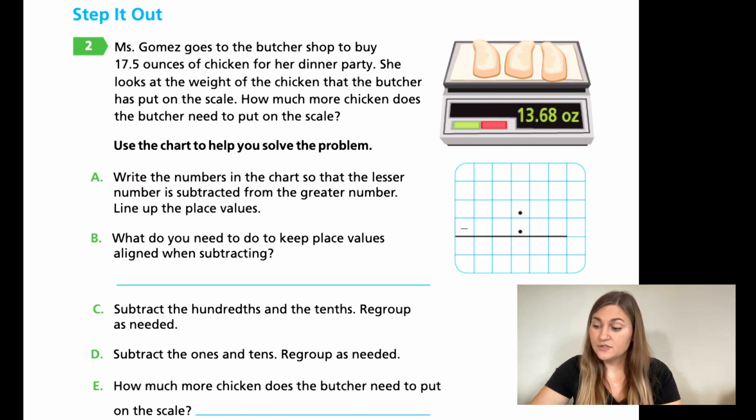B, what do you need to do to keep place values aligned when subtracting? Is there something you might need to add to make sure that those numbers stay aligned? C, subtract the hundredths, then the tenths, regroup as needed. Subtract the ones, and then the tenths, regroup as needed. So what's the answer? How much more chicken does the butcher need to put on the scale? Alright, go ahead and try these couple of problems. We'll come back. We'll solve them together. Go ahead and hit pause here.